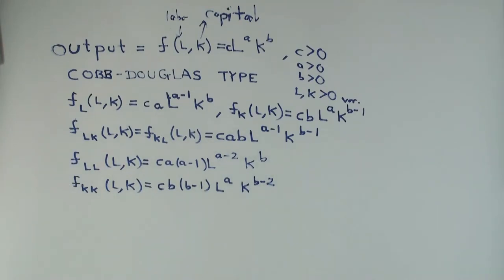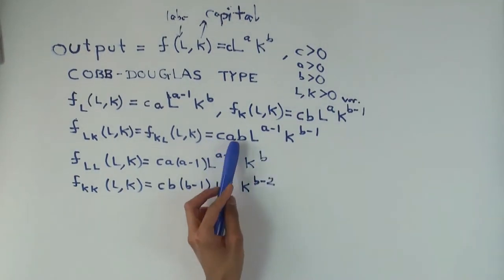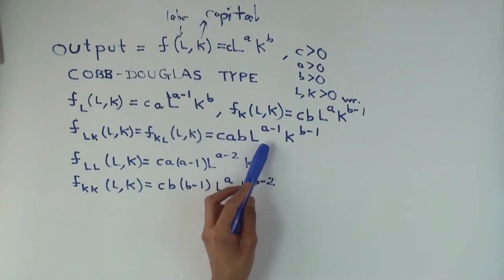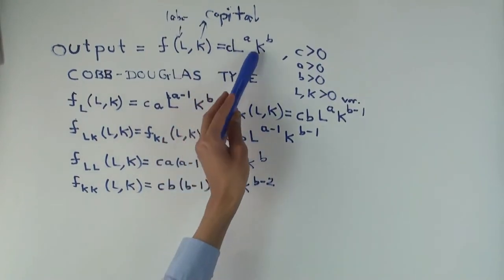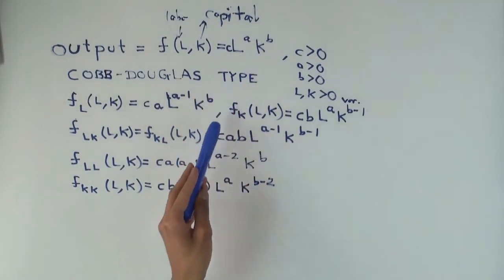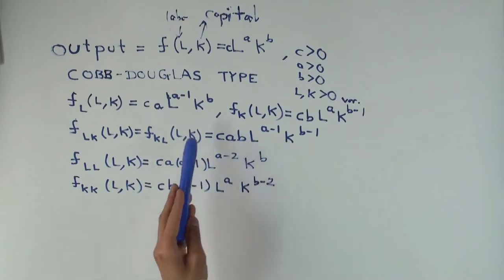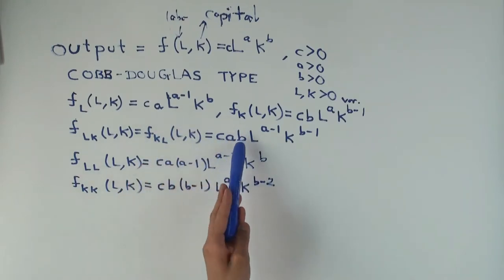Now here, what's the sign of this derivative? Well, c and a are positive, L is positive. We are raising a positive number to any power. A minus one may be positive or negative, we don't care, but the point is this is still positive. So overall, this is positive. Similarly, this is positive.